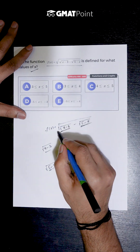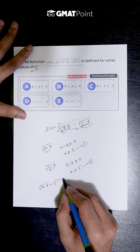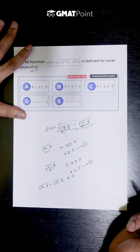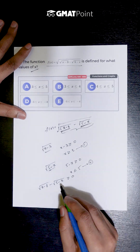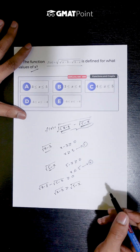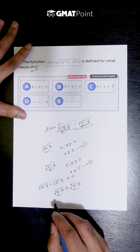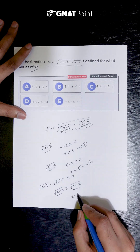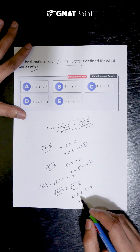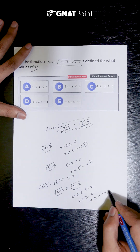Now if we take a look at the final square root, again the value inside this square root has to be greater than or equal to 0. So the value inside is square root of x minus 3 minus square root of 5 minus x, and this must be greater than or equal to 0. Taking square root of 5 minus x to the RHS, we get square root of x minus 3 greater than or equal to square root of 5 minus x. Since square roots are always non-negative, we can square both sides without changing the sign, giving x minus 3 greater than or equal to 5 minus x. Taking x to the LHS and 3 to the RHS, we get 2x greater than or equal to 8, so x must be greater than or equal to 4.